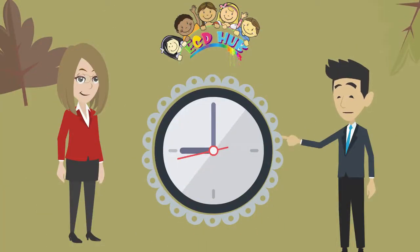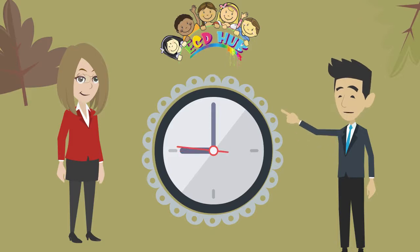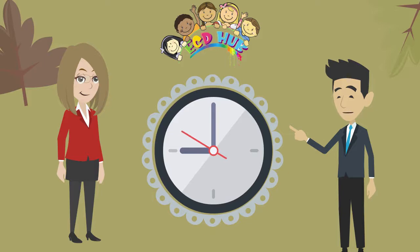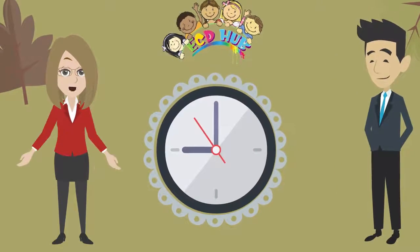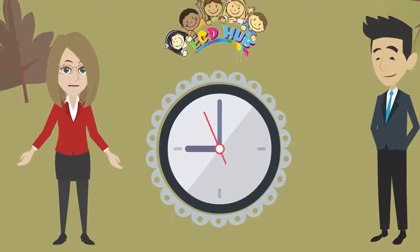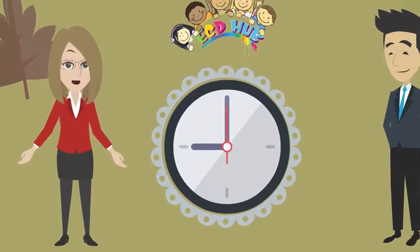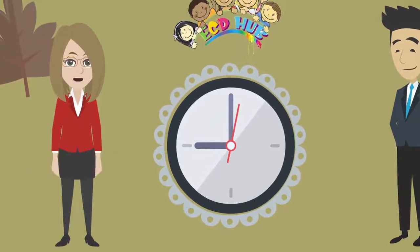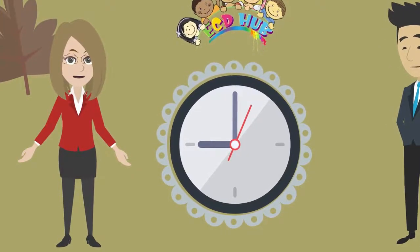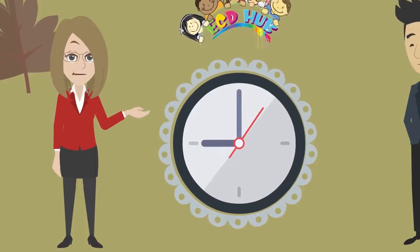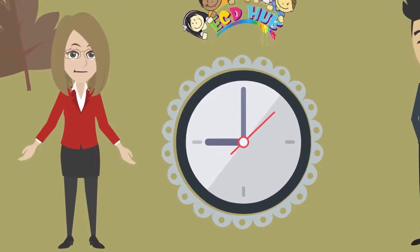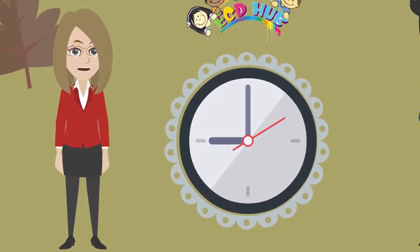The two things on the clock are called the hands. The long one is called the big hand, and the short one is called the little hand. Here's how we look at the clock when we just want to tell the time. The long blue hand shows the minutes. The short one shows the hour. The red one shows the seconds.